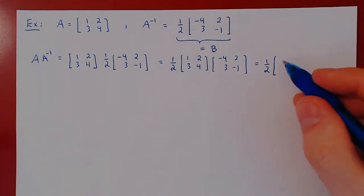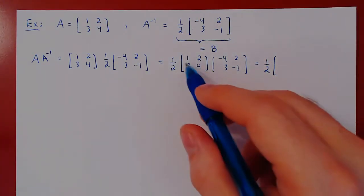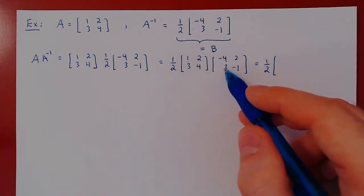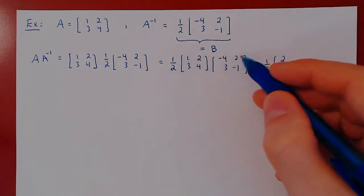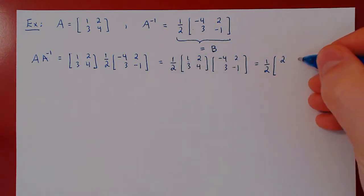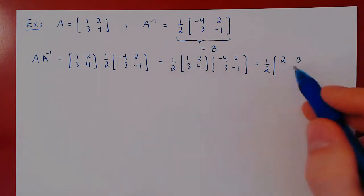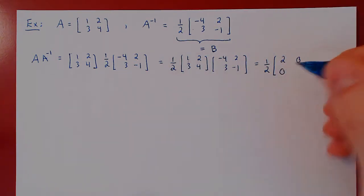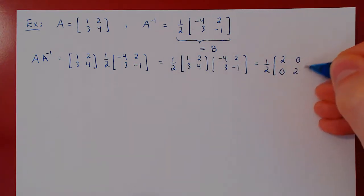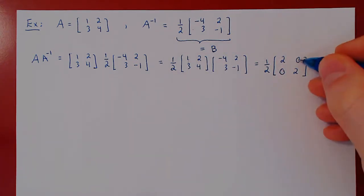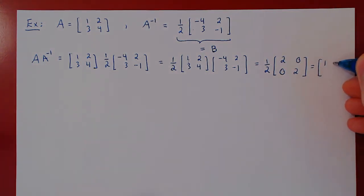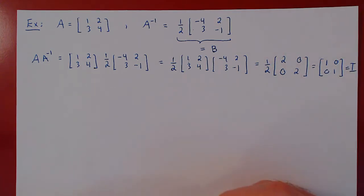Let's multiply out. Constructing the first row by fixing the first row of the first matrix: negative 4 plus 6 is positive 2, and positive 2 minus 2 is 0. Then the second row: negative 12 plus 12 is 0, and 6 minus 4 is 2. If you multiply every entry of this matrix by 1 half, you get the identity matrix. So indeed A times B equals I.